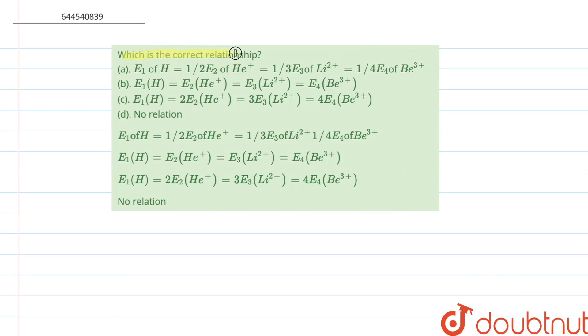Which is the correct relationship? We have to tell which of these is correct where we are given E1 of H, E2 of H+, E3 of Li2+, and E4 of Be3+. We need to determine in which condition their energies will be equal.